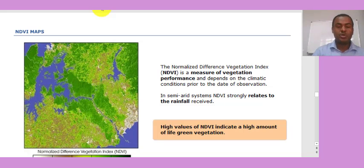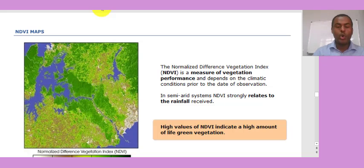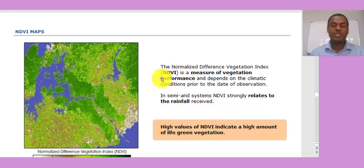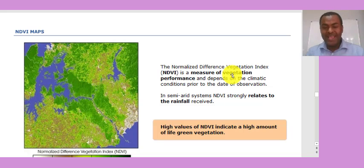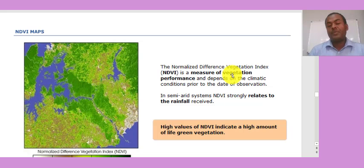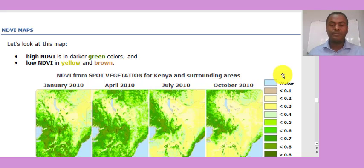NDVI anomaly shows the deviation from normal NDVI, indicating the current vegetation condition. Below-normal NDVI indicates drought, while above-normal NDVI indicates good vegetation conditions. NDVI is a measure of vegetation performance — in good weather, vegetation performs better, shown by highly positive NDVI values. NDVI is strongly related to rainfall received, so if rainfall maps are unavailable, NDVI anomaly can be used indirectly, or both NDVI and rainfall anomaly maps can be used together.